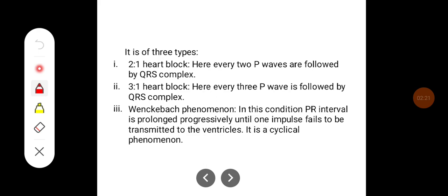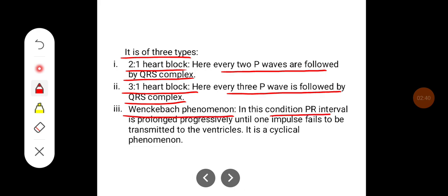It is of two types: 2 to 1 heart block, where every 2 P waves are followed by a QRS complex. In 3 to 1 heart block, every 3 P waves are followed by QRS complex. And Wenckebach phenomenon: in this condition PR interval is prolonged progressively until one impulse fails to be transmitted to the ventricles, and it is a cyclical phenomenon.